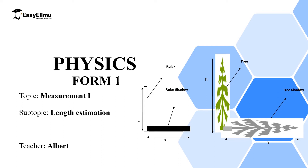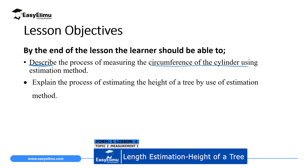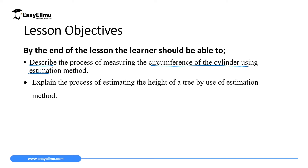Welcome to Easy Limo Learning Simplified. In the previous lessons we discussed methods of measuring length — estimation and accurate measurement using an instrument. In this lesson we are going to focus on length estimation: how to estimate height of a tree, height of a student, height of a building, and more. By the end of this lesson you should be able to describe the process of measuring the circumference of a cylinder using estimation, and explain how to estimate the height of a tree.